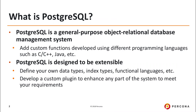So first, what is PostgreSQL? PostgreSQL is most commonly called Postgres. It's an object-relational database management system. That means that it occupies the world between the classic relational database management systems like Oracle and MySQL, and true object-oriented database systems like Visual FoxPro and InterSystems Cache.